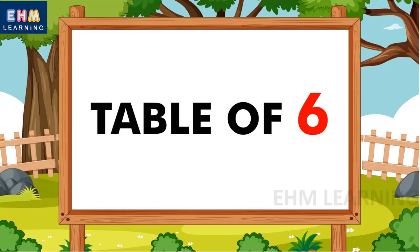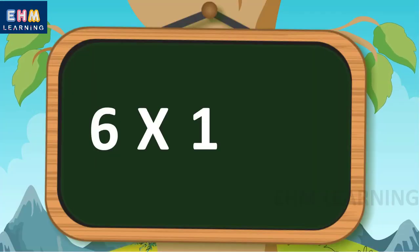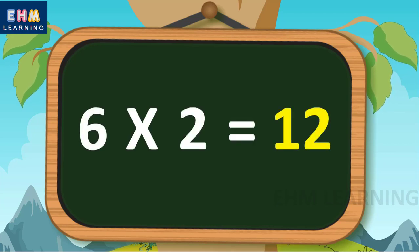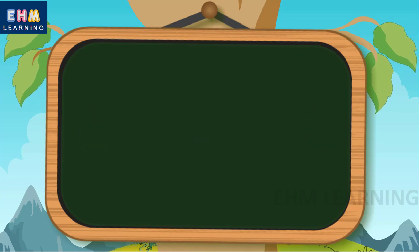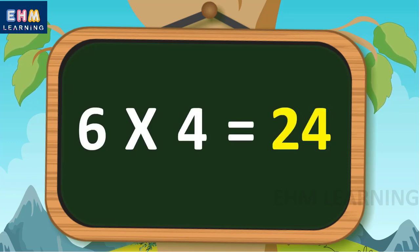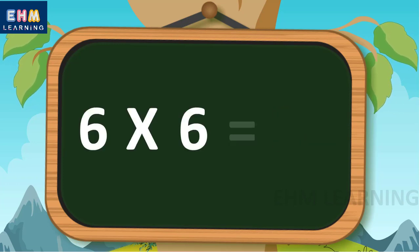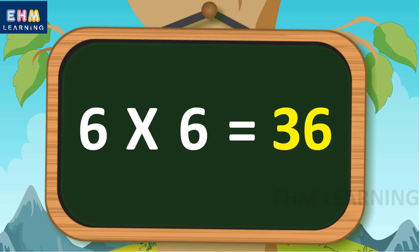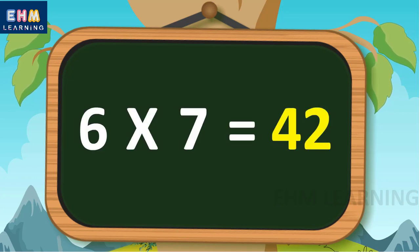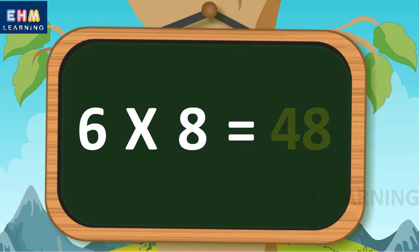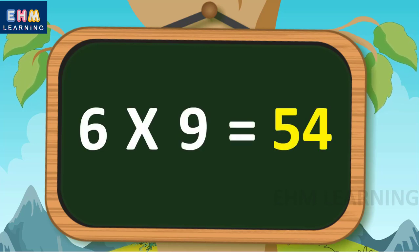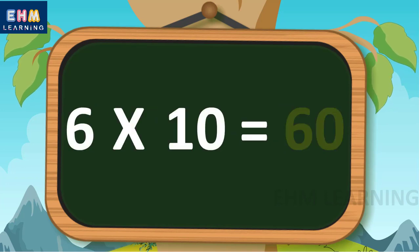Table of six. Six ones are six, six twos are twelve, six threes are eighteen, six fours are twenty-four, six fives are thirty, six sixes are thirty-six, six sevens are forty-two, six eights are forty-eight, six nines are fifty-four, six tens are sixty.